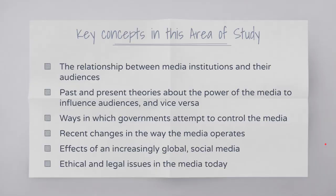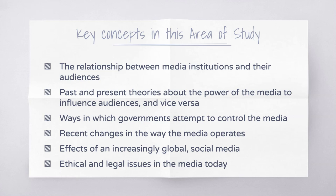Key concepts to consider in this area of study: the relationship between media institutions and their audiences; past and present theories about the power of the media to influence audiences, as well as the power of audiences to influence the media; ways in which governments attempt to control the media or regulate the relationship between the media and audiences; and recent changes in the way that the media operates — by recent I mean more the last 15 years. We'll also look at the effects of an increasingly global and social media in comparison to more traditional forms of media.